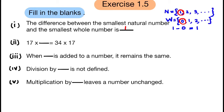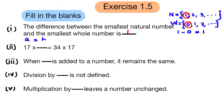By the commutative property of multiplication, a multiplied by b is equal to b multiplied by a. Here b is equal to 34, so 17 multiplied by 34 is equal to 34 multiplied by 17.